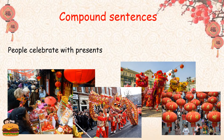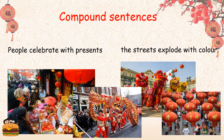People celebrate with presents — that would be a beautiful sentence on its own. However, I'm going to make it part of a clause and add another bit: the streets explode with colour. Now, the streets don't really explode — it just means there's lots and lots of colour around. To make it a compound sentence, what do I need to add? An 'and.' Well done. So: people celebrate with presents, and the streets explode with colour. What a fabulous compound sentence!